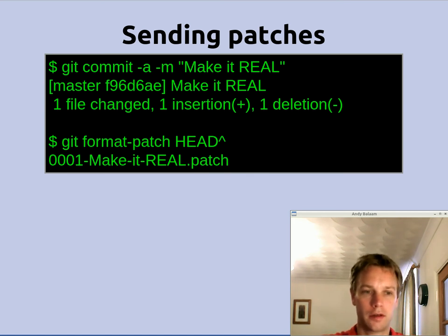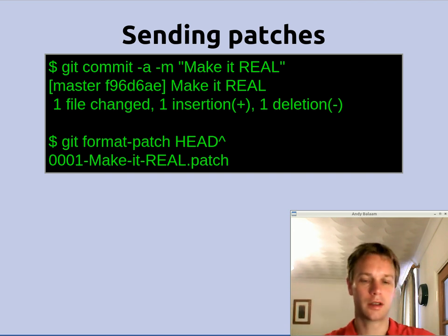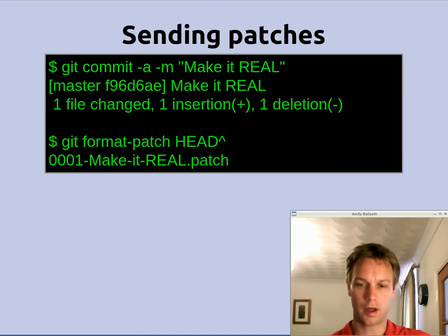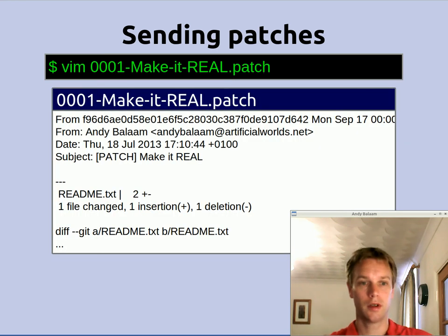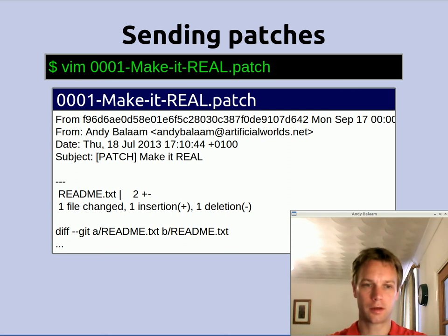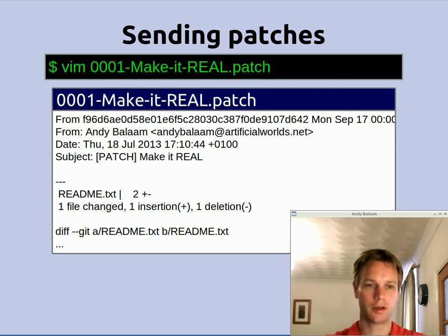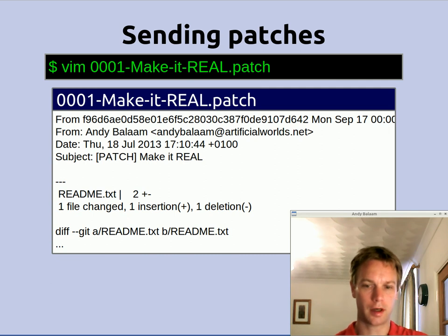Git will make a file called 0001.makeitreal.patch in the local directory, which is a patch you can send to other people containing what you did in that latest change. If you open up that file, it basically looks like an email message, and if you've got an email client that can accept it, you can just open it up and send it. If your email client doesn't want to do that, just open the file and copy and paste that patch into an email, or attach the whole file. People will be able to use it directly and feed it to their patch command on their machine and update their code.